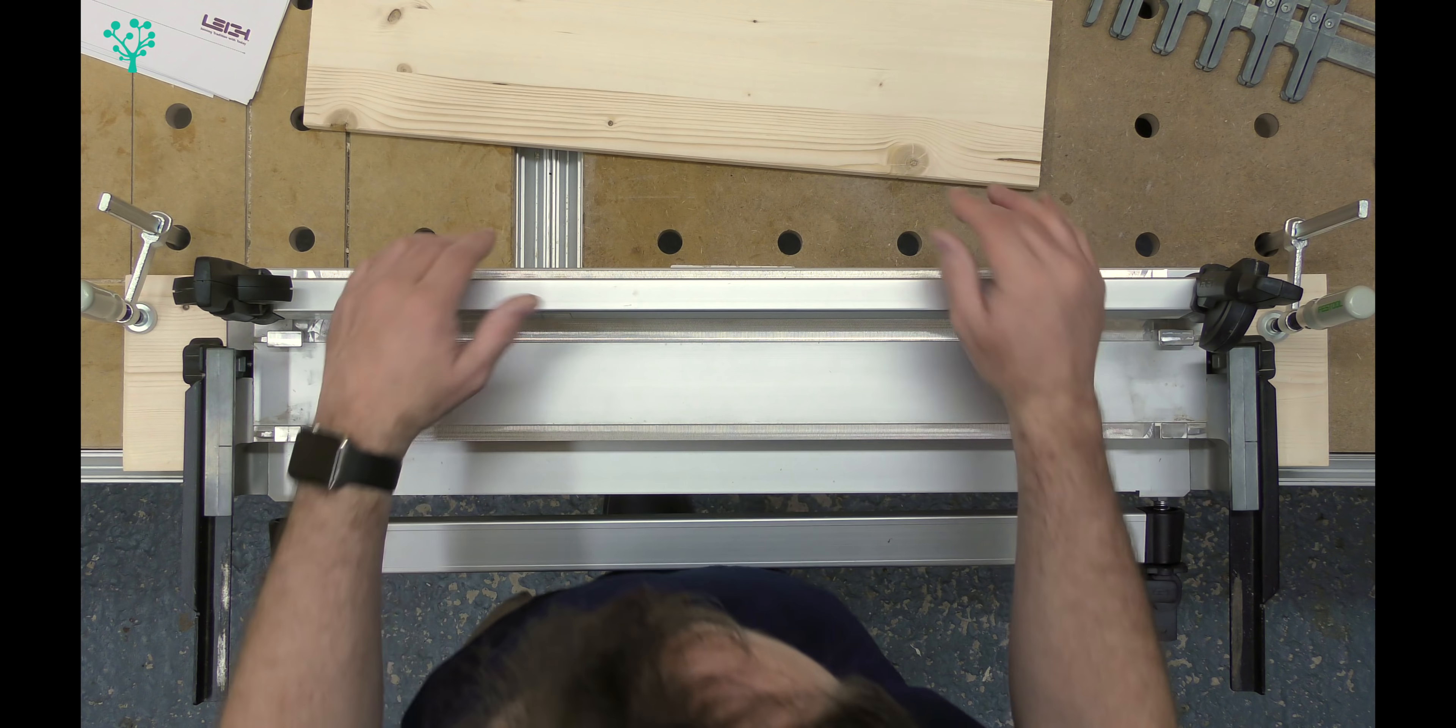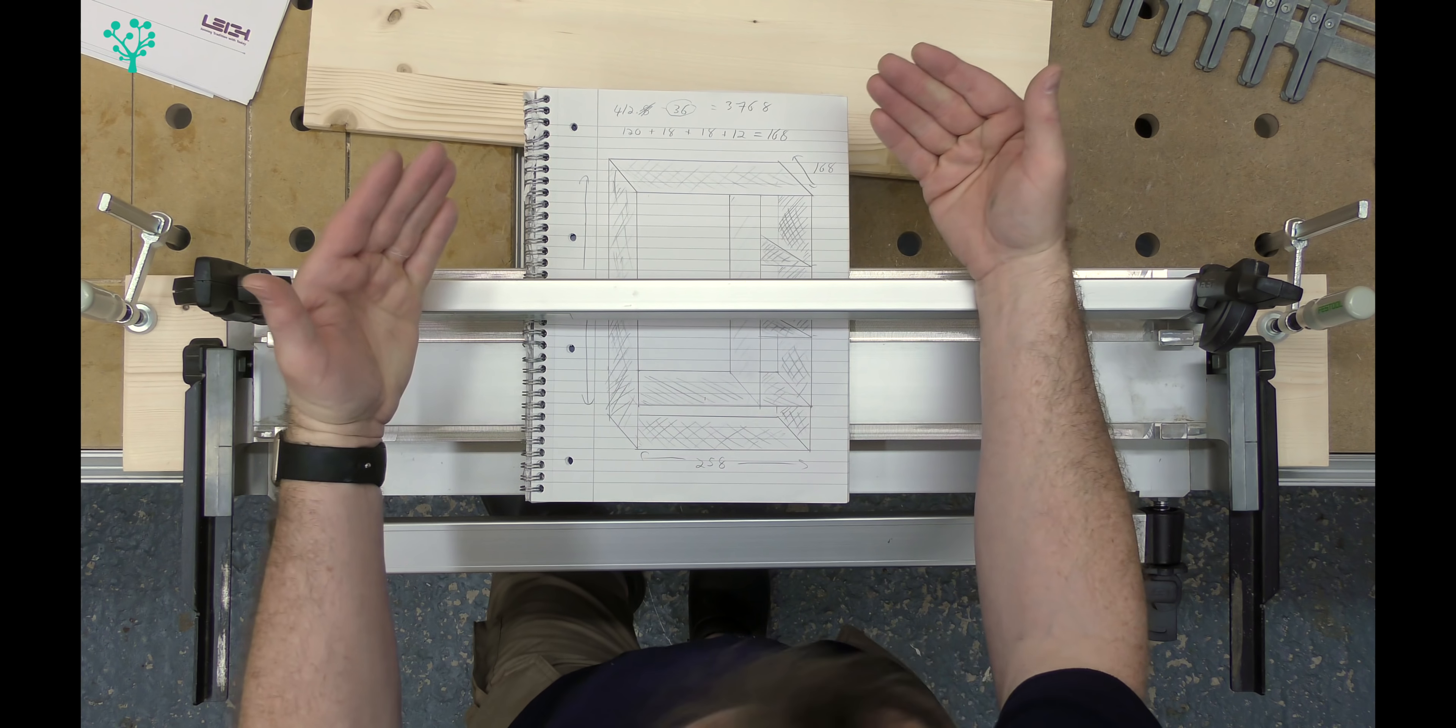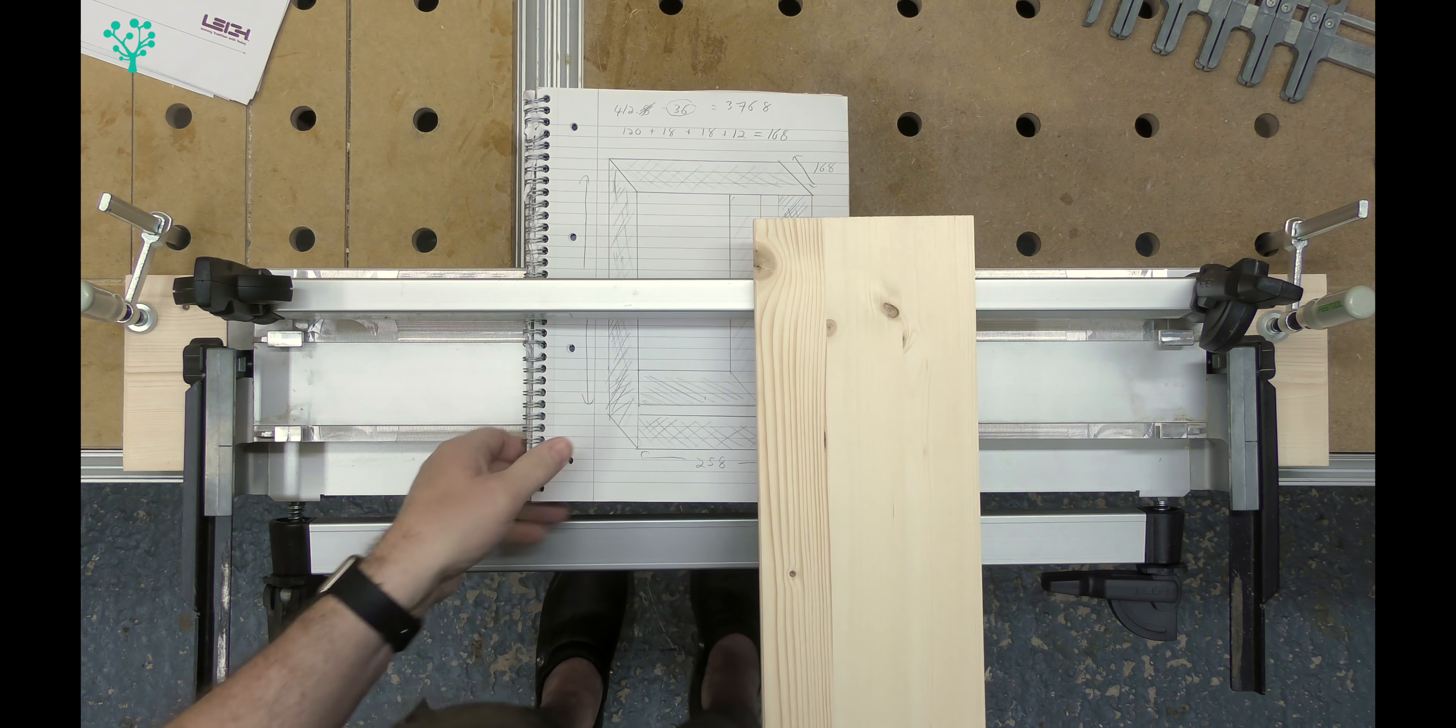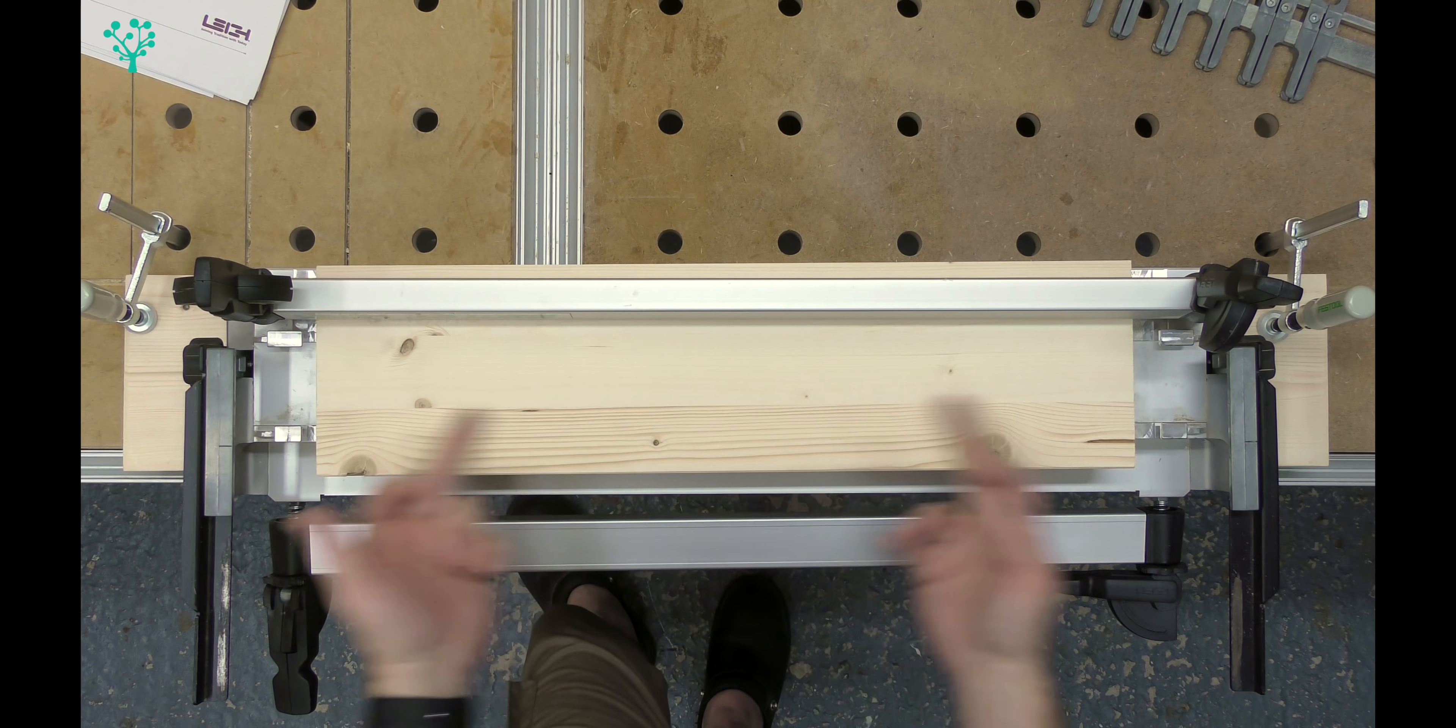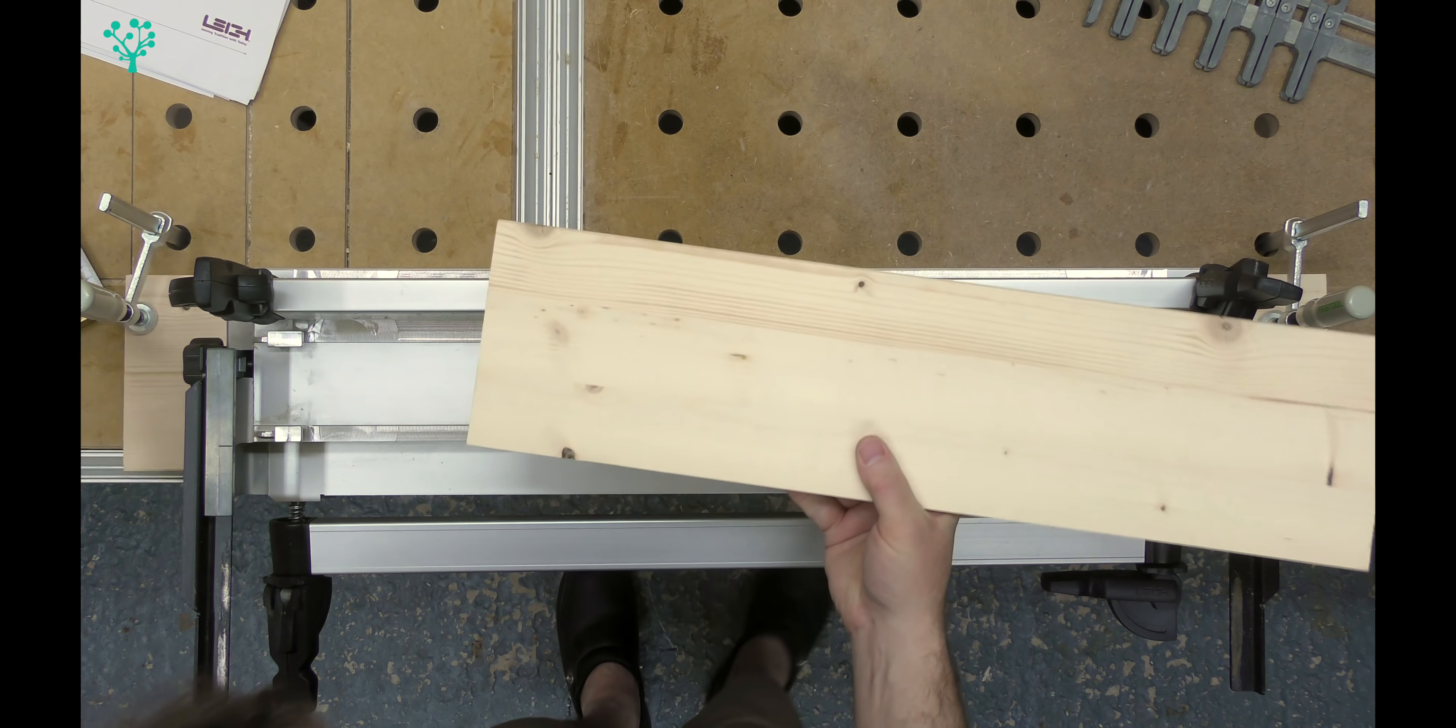We know we've got a depth of the box of 168mm thereabouts. So we know that the width of the boards we're going to use is going to be 168mm. As long as your board is longer than 168mm and fits inside the jig, you're in good shape.